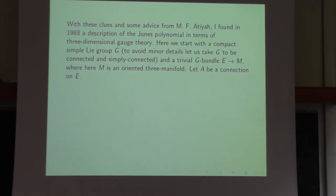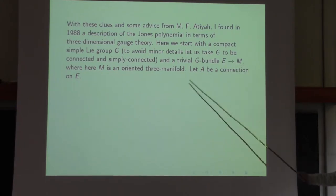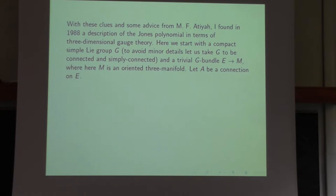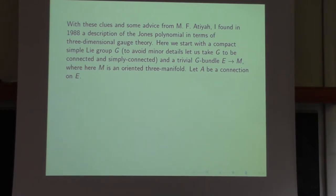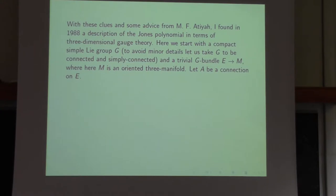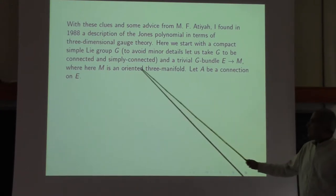We start with a compact simple Lie group G, and to avoid minor details, G is connected and simply connected. Then we have A, the connection on the bundle E. A connection, or as physicists call it, a gauge field, has its curvature or field strength. If M were a Riemannian manifold, we could write down all kinds of gauge-invariant local integrals of the connection. For example, the usual Yang-Mills action is the square of the curvature. All those invariants would be defined using a Riemannian metric on M.